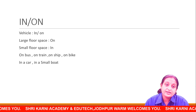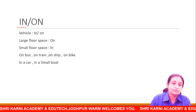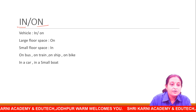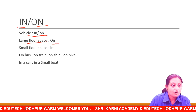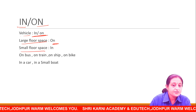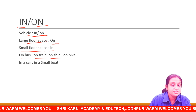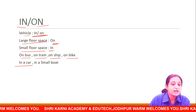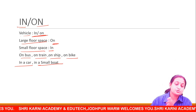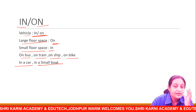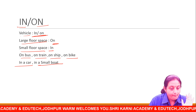Next है: in and on for vehicles. In or on — vehicle के लिए आप in or on use करेंगे. Large floor surface के लिए on, small floor surface के लिए in. On bus, on train, on ship, on bike — in car, in a small boat. अब मैं आपको space समझाती हूँ — vehicle के लिए आप in or on use करेंगे.